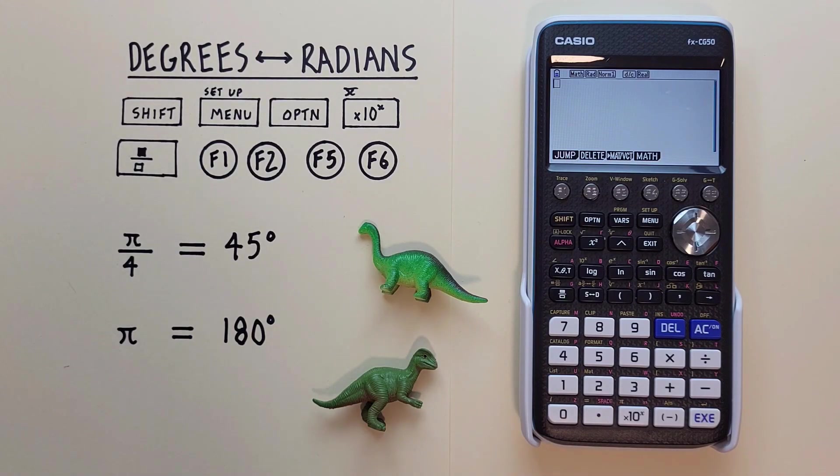Hello and welcome to HD Calcs. I'm Rick, and in this video we're going to have a look at how we can convert between degrees and radians on the Casio FX CG50 graphing calculator. If you don't have one of these calculators but would like one, check the link in the description below.